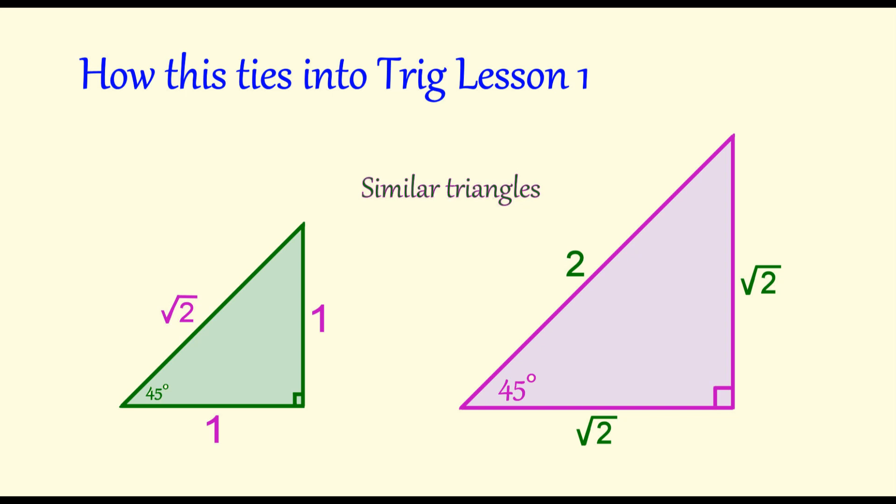Now let's check the sine and cosines of 45 degrees. You could see for the small triangle, we'll get 1 over square root 2. For the larger one, we get square root 2 over 2. And they are the same.